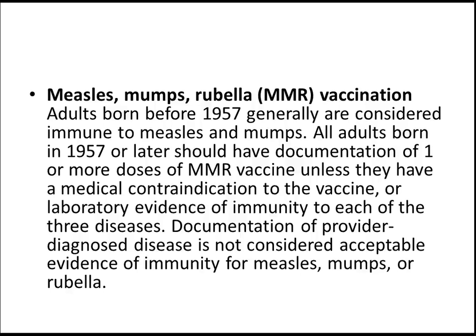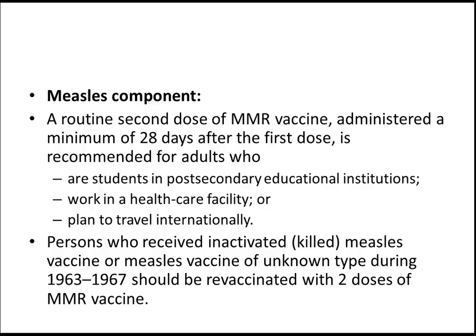Measles component: A routine second dose of MMR vaccine, administered a minimum of 28 days after the first dose, is recommended for adults who are students in post-secondary educational institutions, who work in health care facilities, or who plan to travel internationally. Persons who received inactivated or killed measles vaccine, or measles vaccine of unknown type, during 1963 to 1967 should be revaccinated with two doses of MMR.